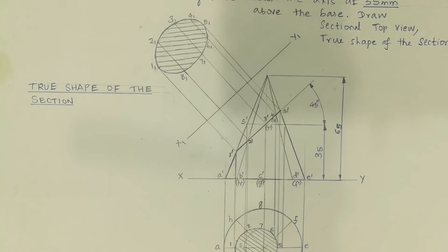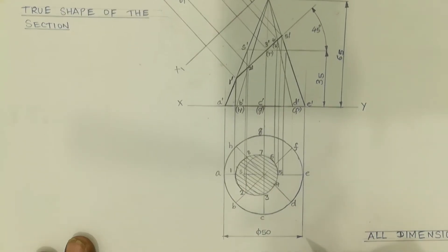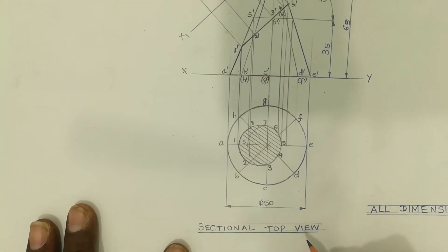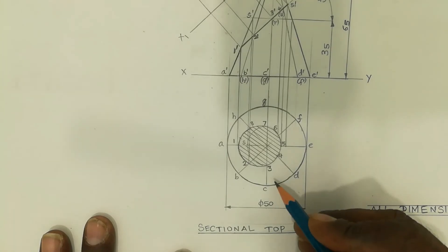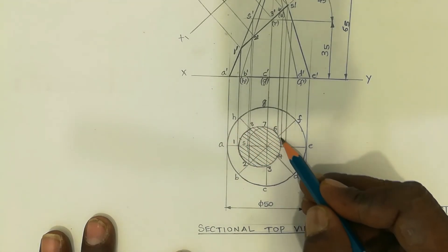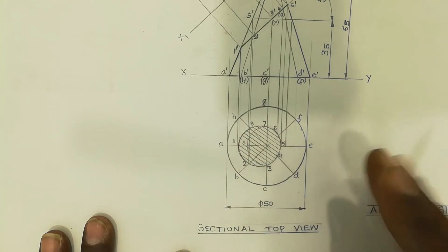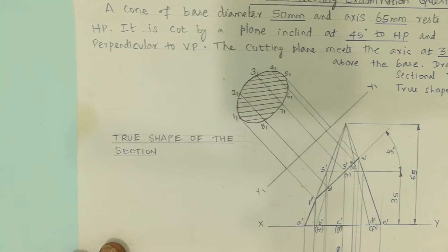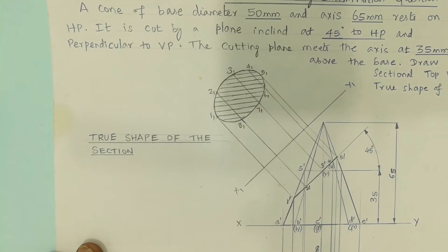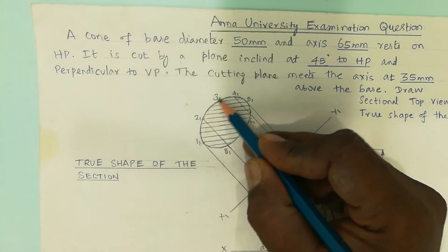This is about a truncated cone. This is the corresponding top view, called the sectional top view, shown in this video. In the cut portion, showing the cut surface — the surface is called the true shape of the section. The true shape of the section will be seen as an ellipse.